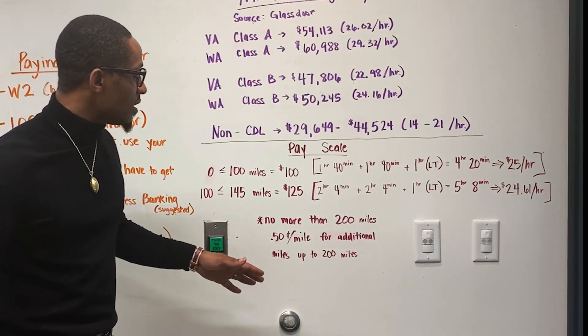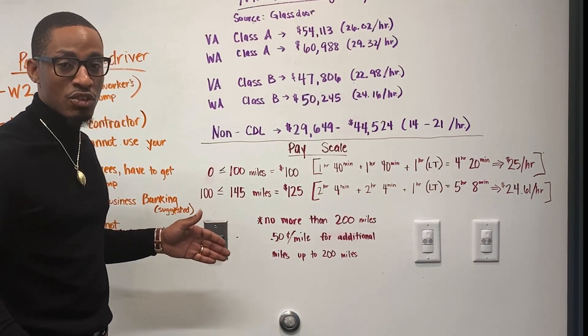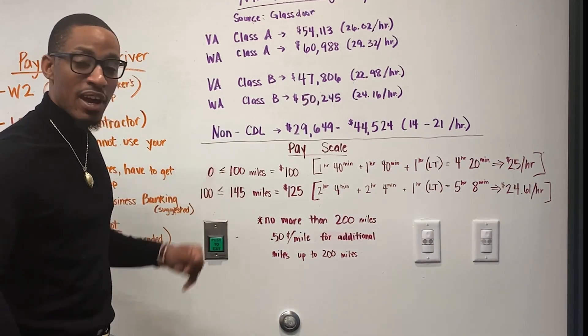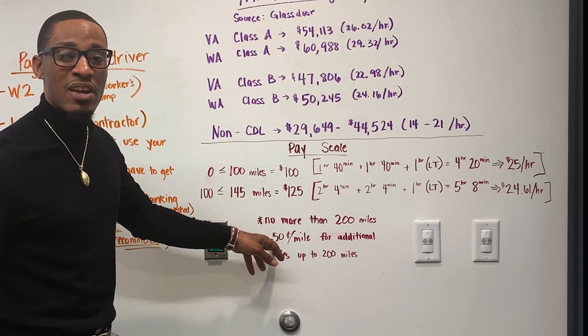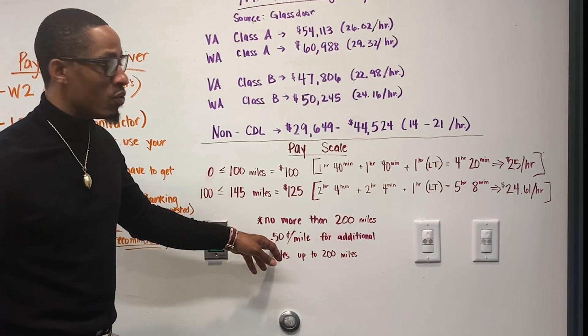So if you're doing anything from 145, if the driver drives anything over 145 miles up to 200 miles, you want to then pay the driver 50 cents for every mile that driver drove over.